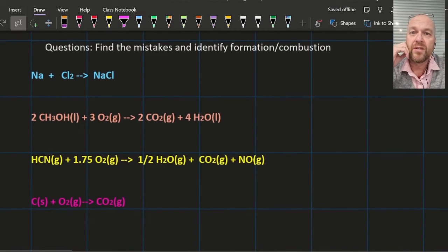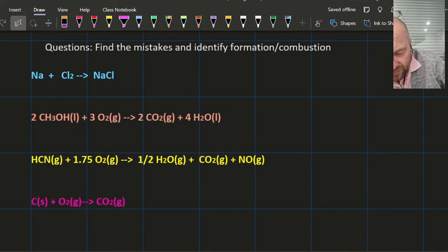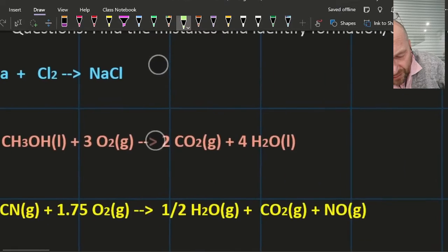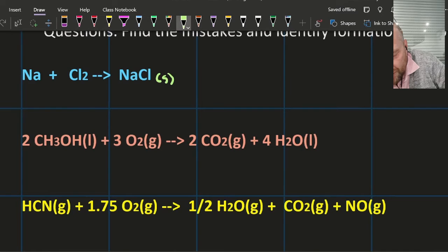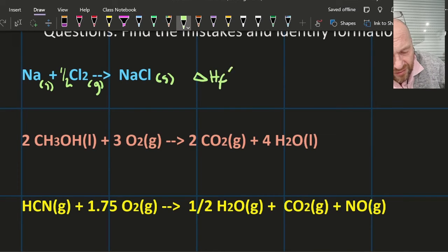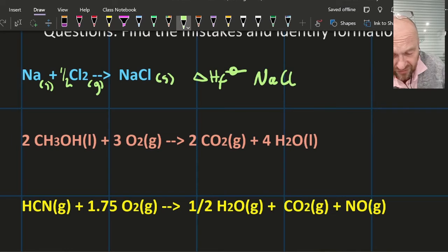Okay, so this one's garbage because I need state symbols. So sodium chloride is a solid—it's ionic. And that's going to give me... metal is a solid, it's a metal. Chlorine is a gas, and that has to be half. Okay. And then that's going to be the standard enthalpy change of formation for sodium chloride.